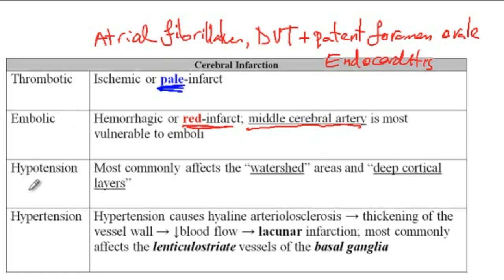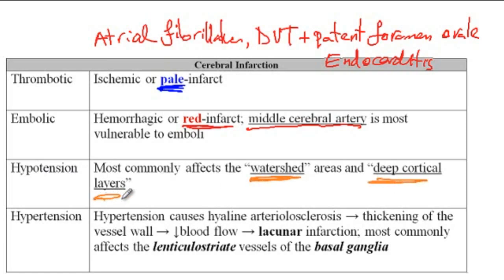Next, we have systemic hypoperfusion, which can result from hypotension from cardiac malfunction, pulmonary embolism, or bleeding. This condition will affect the areas that are least perfused in the brain, including the watershed areas as well as deep cortical layers. One of the presentations of systemic hypoperfusion is visual disturbances.